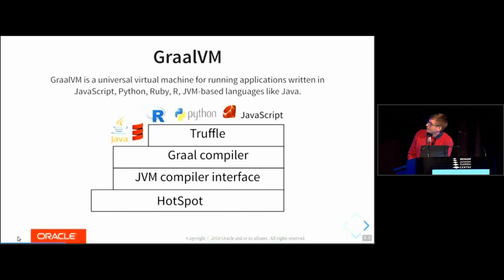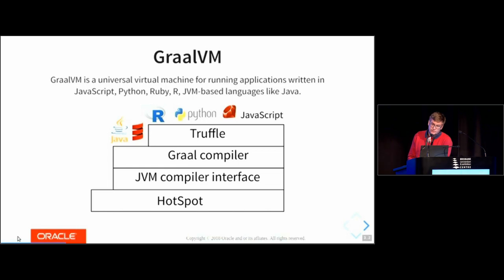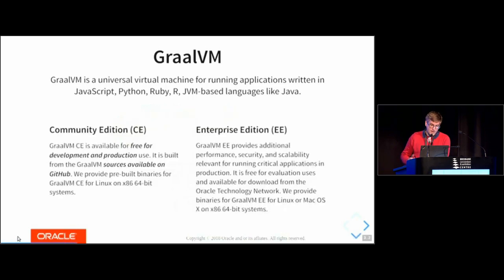What we do with GraalVM is we have an architecture where you have several components that, as a language implementer, you can reuse. It's all built on top of the HotSpot JVM — that's the Java virtual machine — but that's just an implementation detail. In the JVM, which is a very advanced virtual machine with years of development, we replace the compiler with one we've written called the Graal compiler, and we provide a framework for implementing programming languages called Truffle. The Graal compiler and Truffle work together to make the languages run faster.